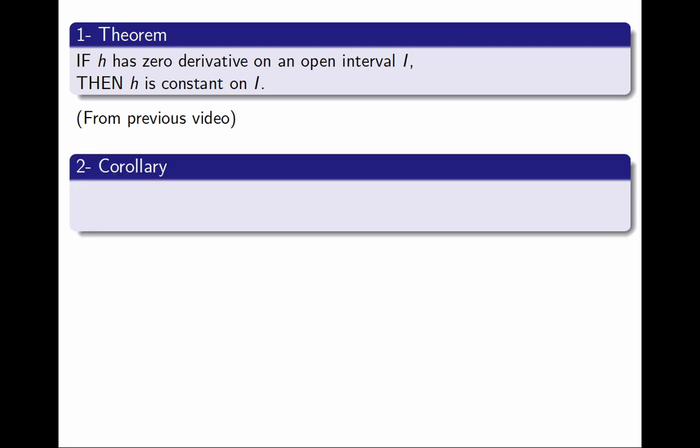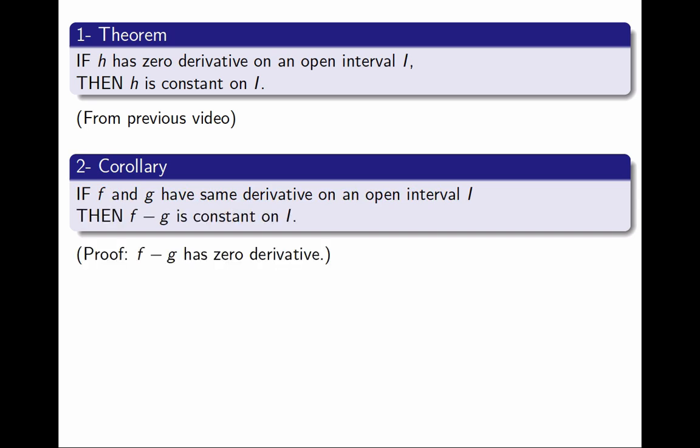Second, a corollary. A corollary means a theorem that is a quick consequence of some other theorem. If instead of one function, I begin with two functions f and g, and I assume they have the same derivative on an open interval, then what can I conclude? Well, if they have the same derivative, I can conclude that the difference must be constant. And that's because the difference will have zero derivative. So by the theorem, the difference must be constant.